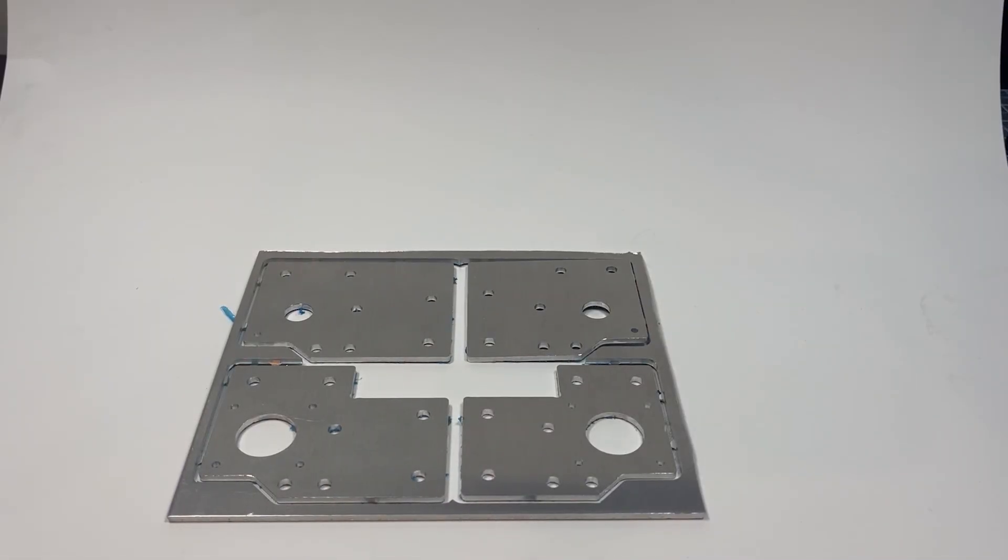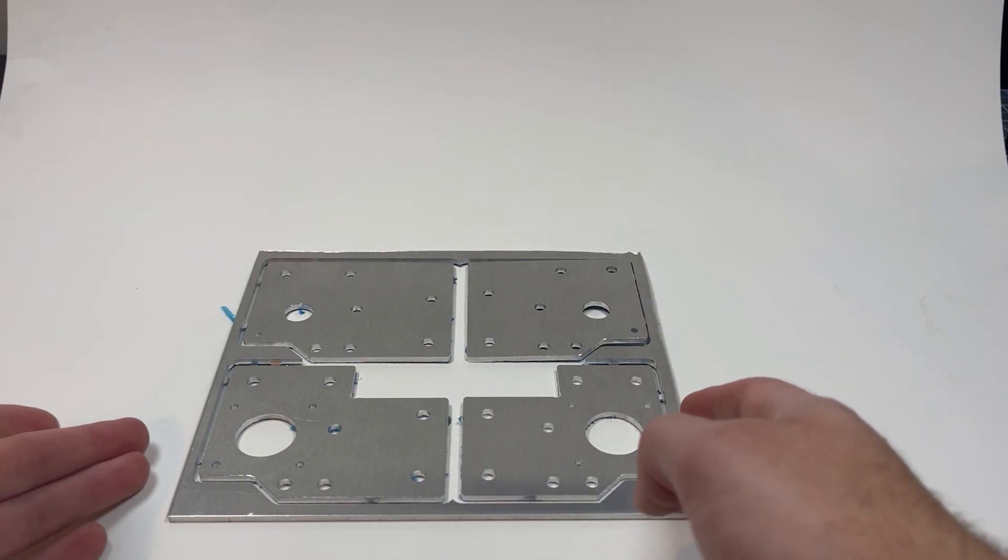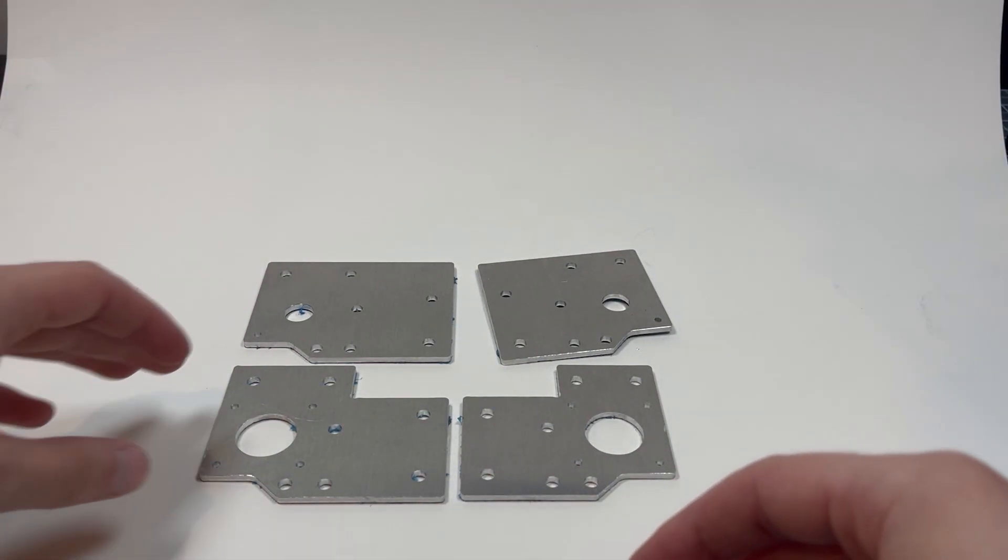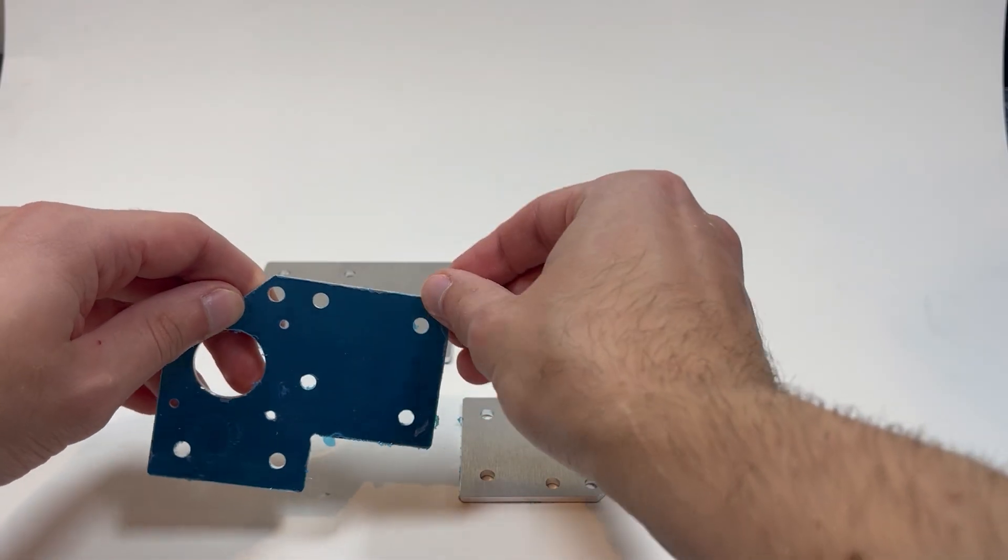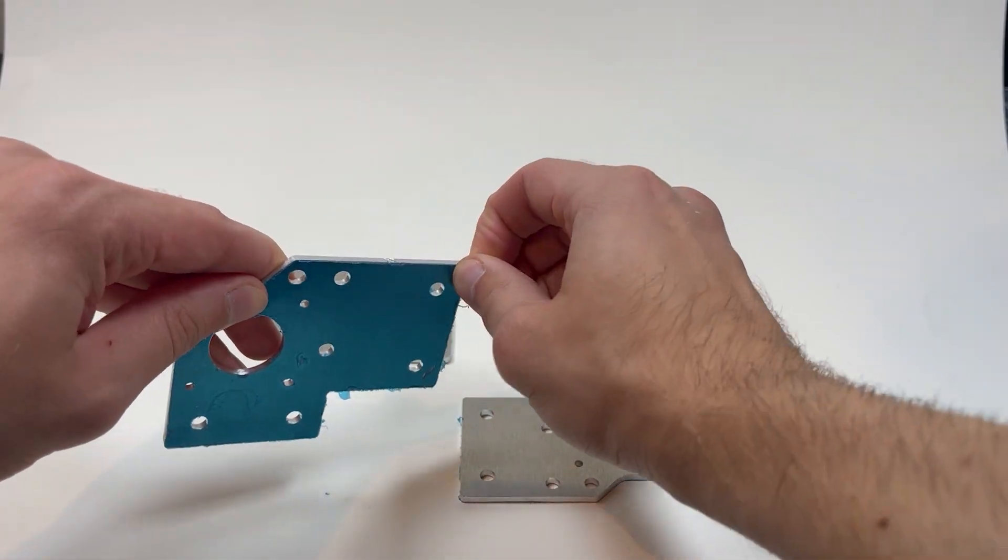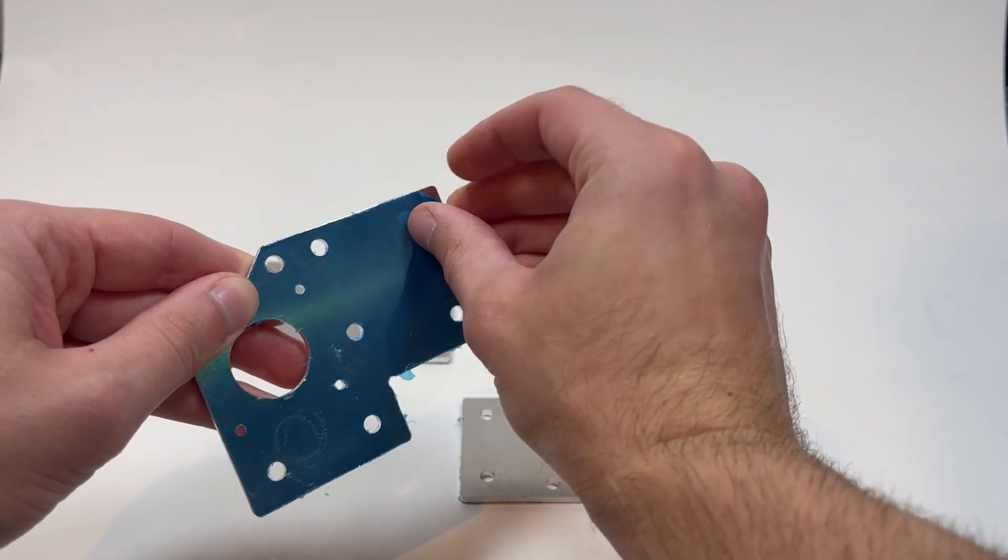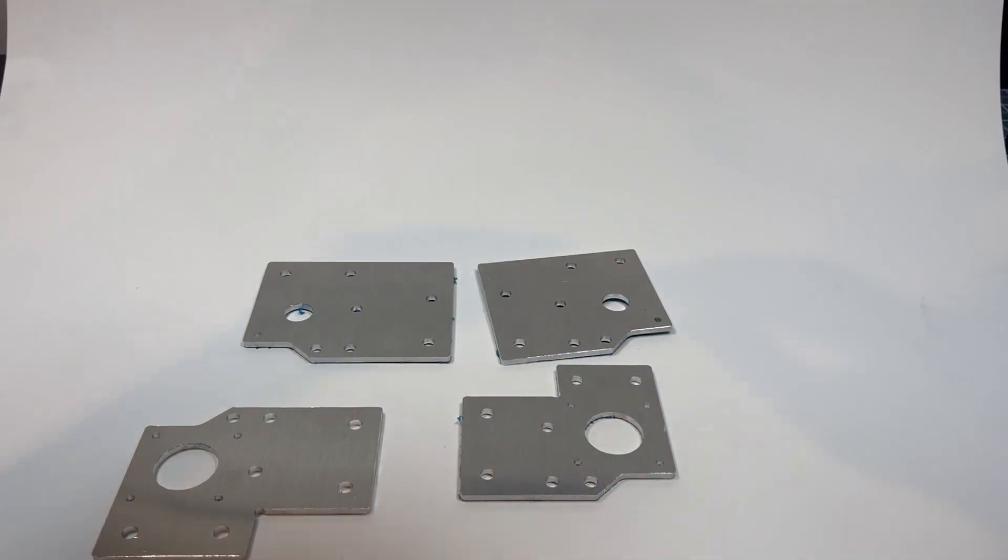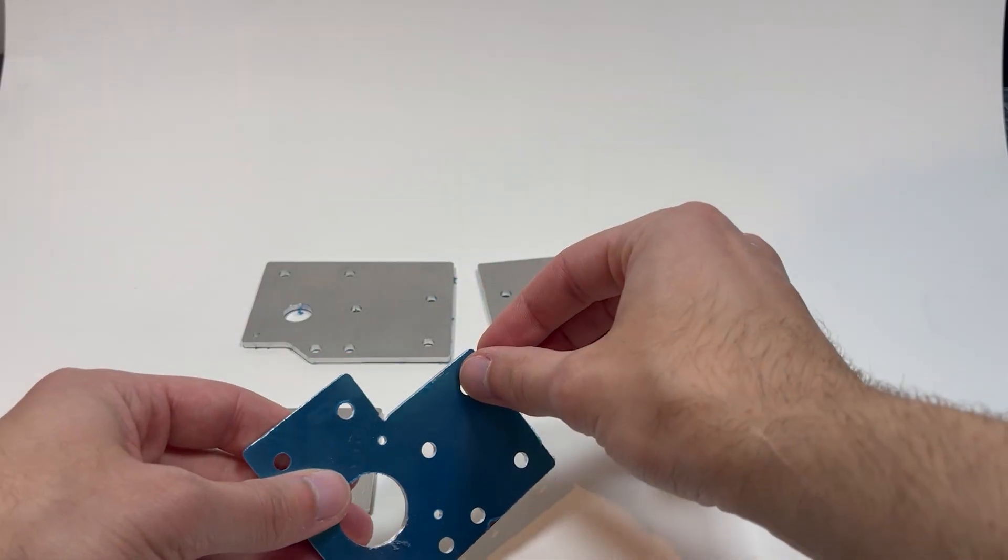And here we go with the grand reveal. Lifting the plates out of the frame. Boom. Here are the four plates for the Hive 3D printer. So we're going to do the satisfying peel, and peel these little pieces of plastic off. They're kind of stuck on there, but they are coming right off. Yeah, we have all four plates successfully made.